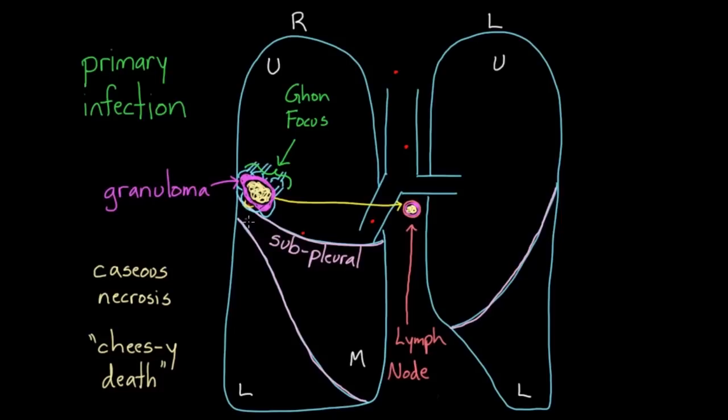And both of these, if you were to try to name both of these together, the lymph node that has a granuloma and the Ghon focus together make up what we call the Ghon complex. So that just refers to both of the areas of disease.